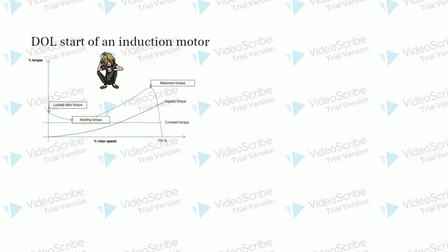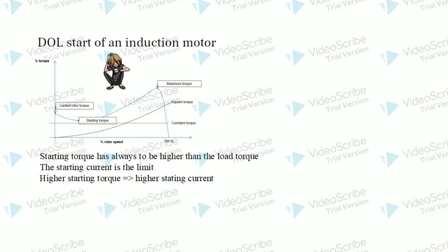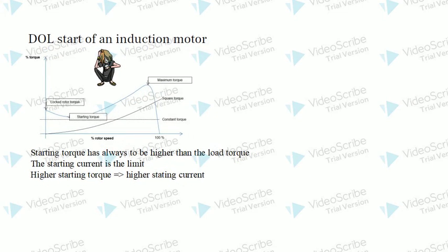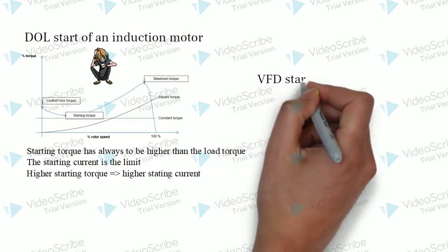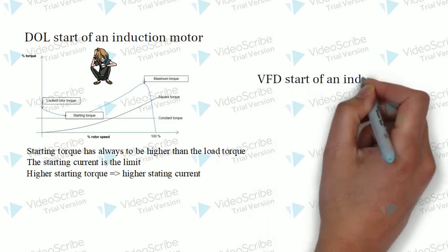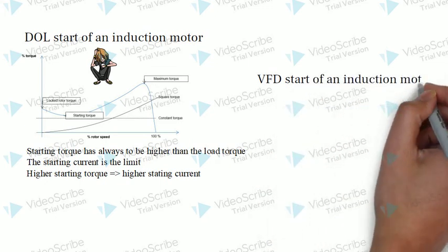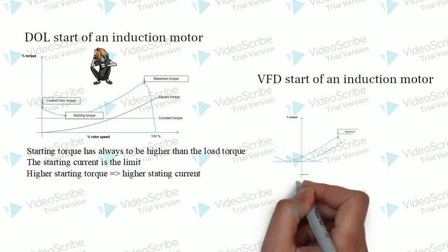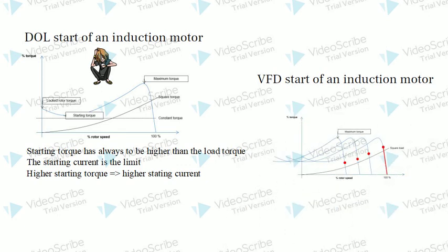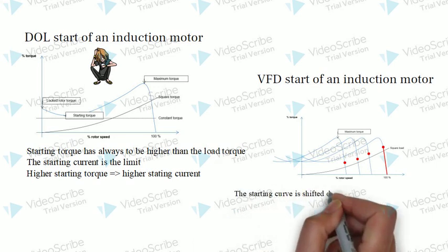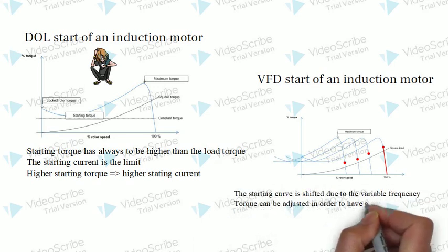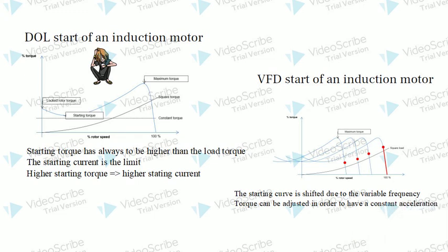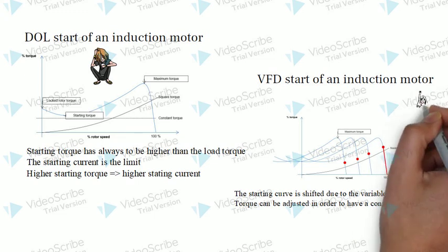If you want to know more about load types, do watch my upcoming videos. In the case of a VFD start, voltage and frequency are both controlled, so starting can be adjusted as per our application requirement. Torque can be varied to get a constant speed ramp time. With VFD, the only thing we need to consider is maximum torque — no need to worry about starting torque.